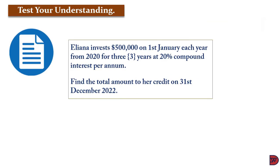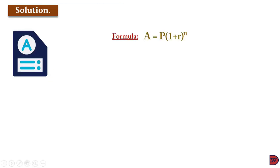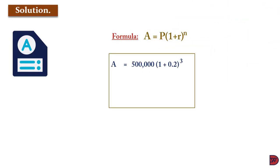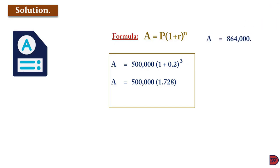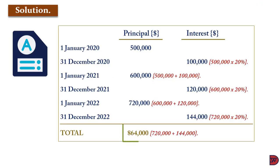Using the formula for Eliana's investment of $500,000 for 3 years at 20% compound interest: A = $500,000 × (1 + 0.2)^3. Here 0.2 is 20% expressed as a decimal, and 3 represents the three years from 2020 to 2022. This gives $500,000 × 1.728 = $864,000, confirming the same answer obtained through the year-by-year process.